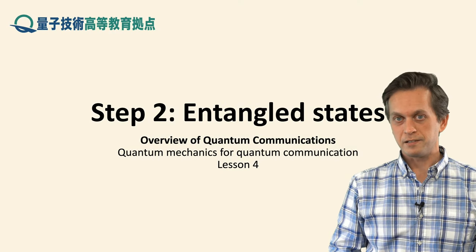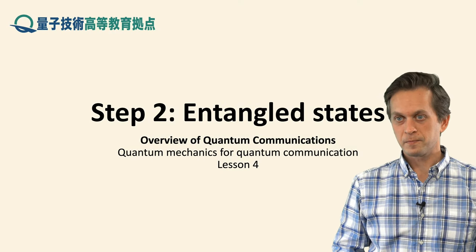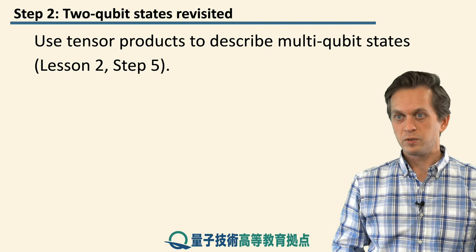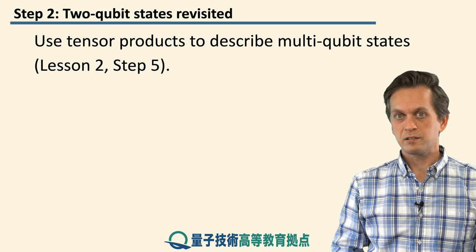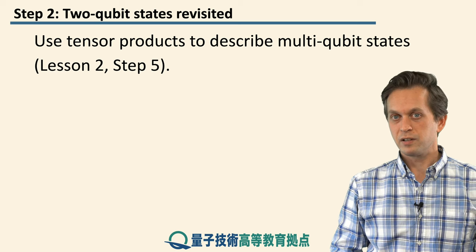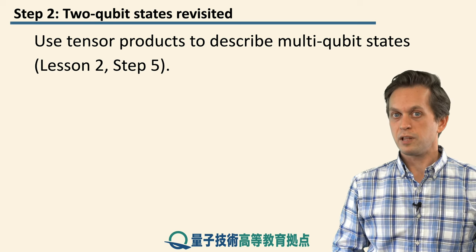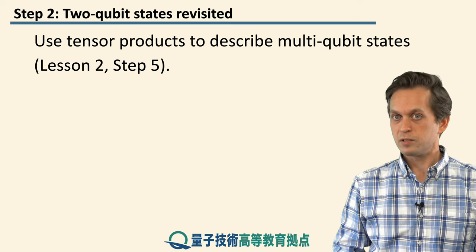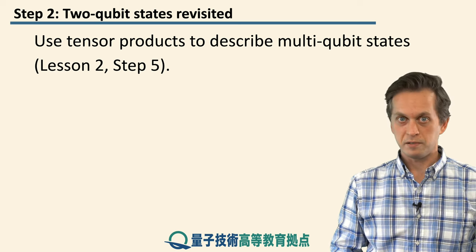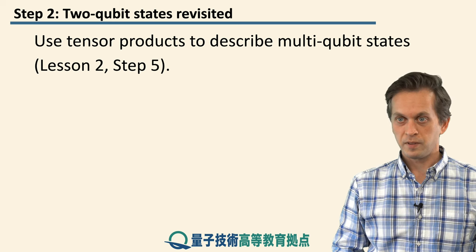Step 2: Entangled states. So we saw in lesson 2, step 5, that in order to describe states of many qubits, we have to use the tensor product.